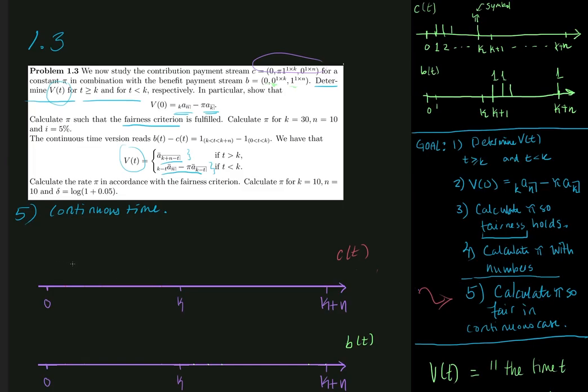well actually I can see that there is a mistake in the exercise here. The continuous time version reads 1, the indicator that looks like this, and then minus pi multiplied by the indicator here. And what we mean by this is, well the benefit is given by the indicator function of t between k and k plus n.